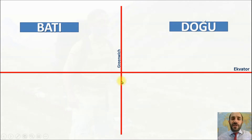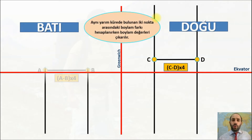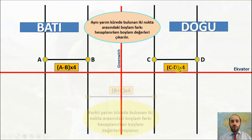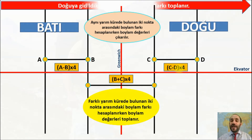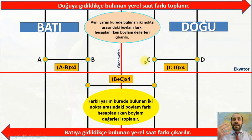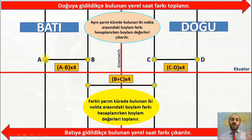Dünyayı Greenwich'e göre, başlangıç meridyenimize göre, doğu ve batı olarak ikiye ayırıyoruz. Eğer verilen iki nokta da doğuda ya da batıda aynı yarım küredeyse meridyen değerlerini çıkartıp 4 dakikayla çarpıyoruz. Eğer noktalardan biri doğuda biri batıdaysa bu sefer meridyenler toplanır ve 4 dakikayla çarpılır. Sonra zaman farkını buluyoruz.